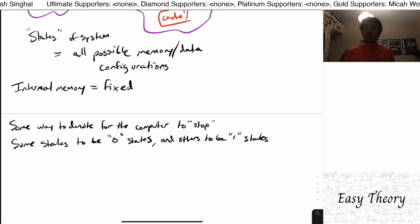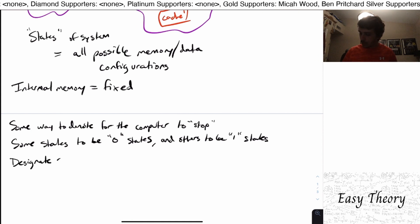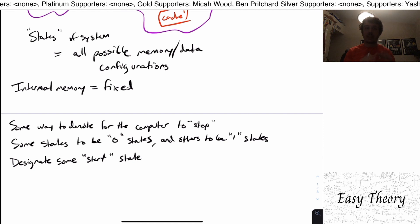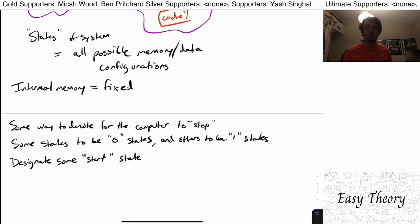And when we turn the computer on, well, we got to start in some configuration. So we need to designate some start state. So some state is going to be the state where we turn the computer on, and we're ready to receive input, then the computation happens, we figure out what state we're in, and then decide whether that's a zero state or a one state.